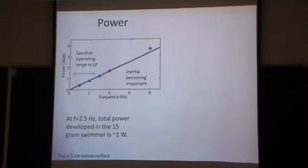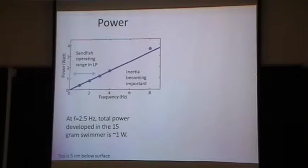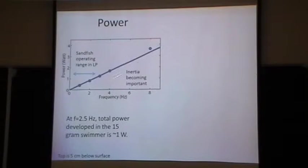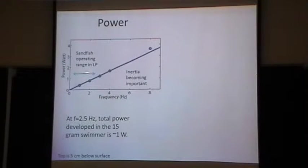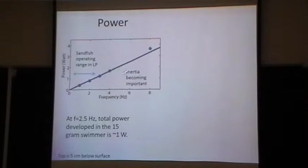We can also look at power: it's linear in frequency, as expected since power equals force times velocity, and since force is independent of frequency while velocity increases with frequency, power scales linearly in the sandfish's operating range. As we push to frequencies the animal was never observed to operate at, it begins to deviate — that's where inertial effects start to become important.